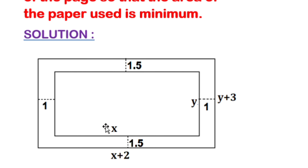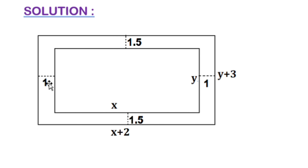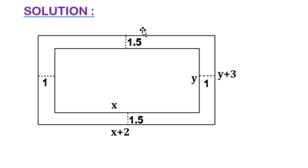Let X and Y be the dimensions of the printed area — length X and breadth Y. In the length of the paper, left side 1 cm and right side 1 cm are added to X, so the length of the paper is X plus 2. Similarly, top 1.5 cm and bottom 1.5 cm are added to Y, so Y plus 3 is the breadth of the paper.